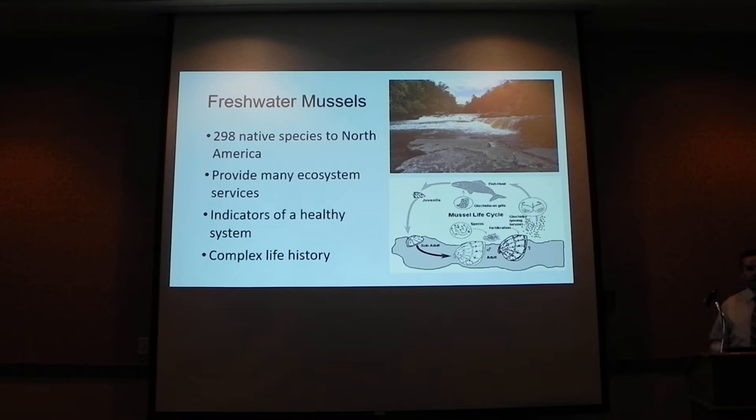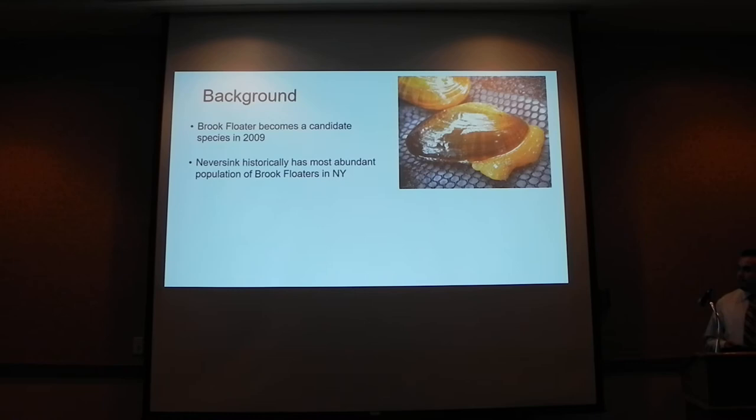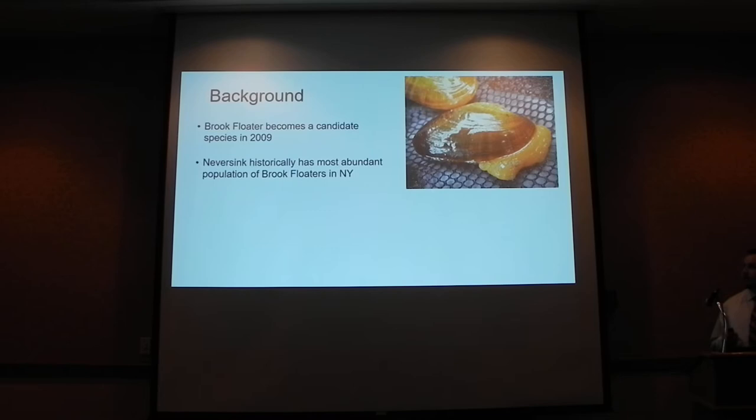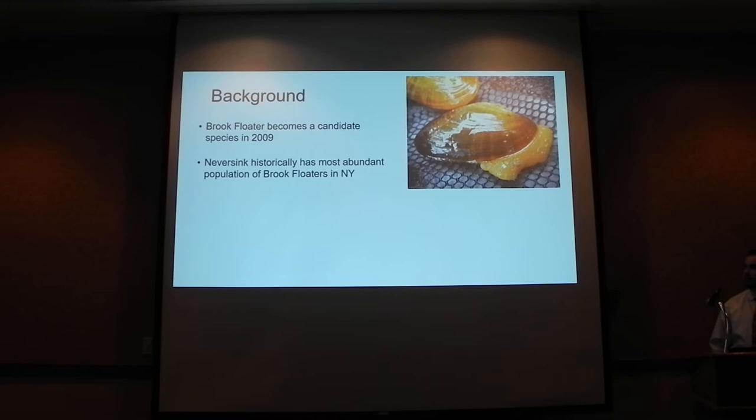We can't talk about freshwater mussels without talking about their complex life history, where their larvae stage called glochidia require a host species of fish for their development and dispersal. To give you a little background on this project, the Brook Floater was listed as a Canada species in 2009, which led a charge over the last decade with a number of projects looking to gain more information on what they're looking like these days.